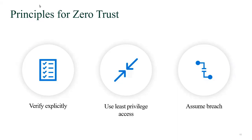I always want to verify explicitly. I always want to use least privilege access. And I always want to assume breach — everything is compromised until proven otherwise. If I approach everything I do from those three things, which is the very basis of what Zero Trust says, then you're enabling ZT in some way, shape or form. There are many ways to do this, different avenues of leveraging technology to enable this, but at the end of the day, if you go through all the research and history around ZT, this is what you're doing.